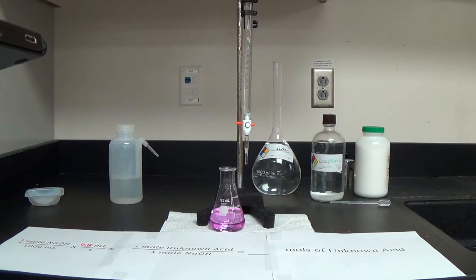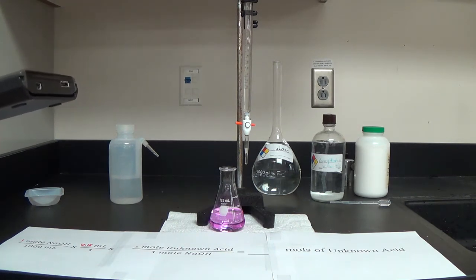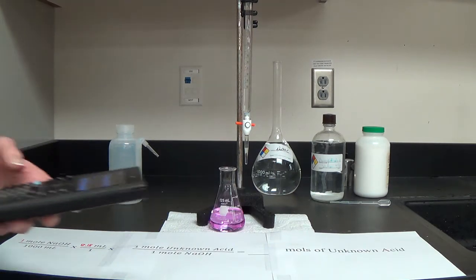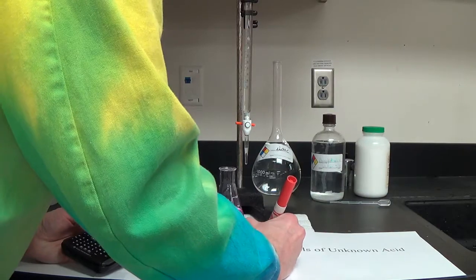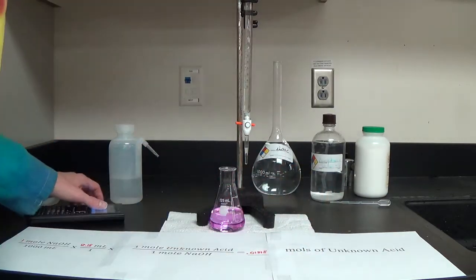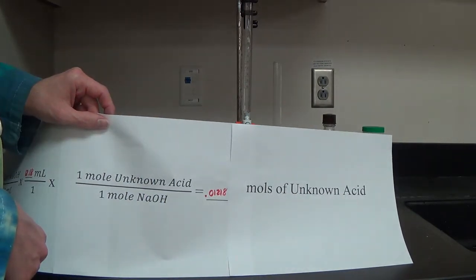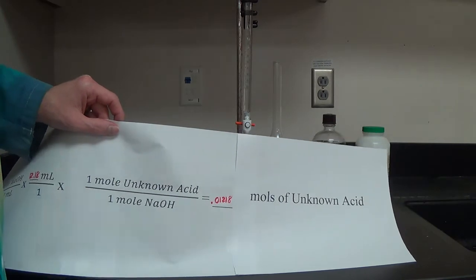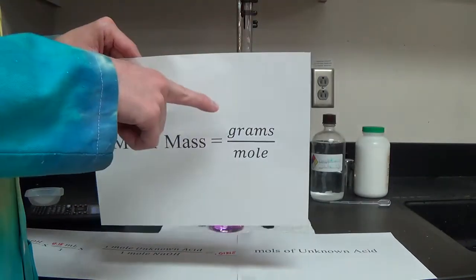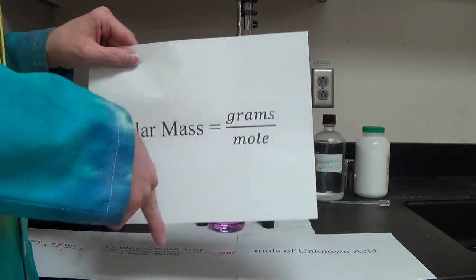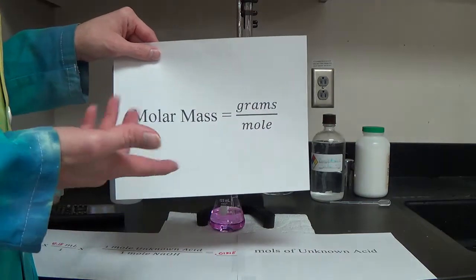So when I take my molarity times the volume that I used and divide by the thousand milliliters in a liter, I get my moles of unknown acid. And now I'm ready to do my molar mass. How do we do molar mass? Grams divided by moles. I measured my grams before I started, and I have my moles now from my calculation. There's my molar mass — I'm done.